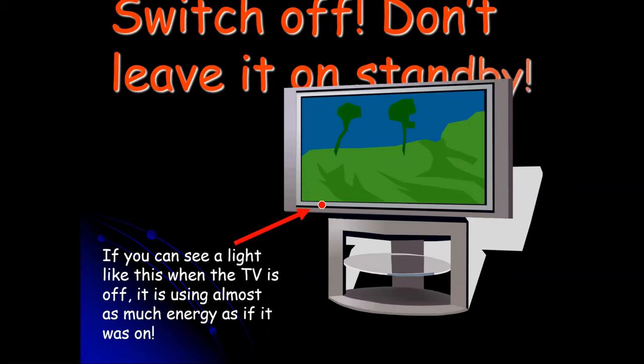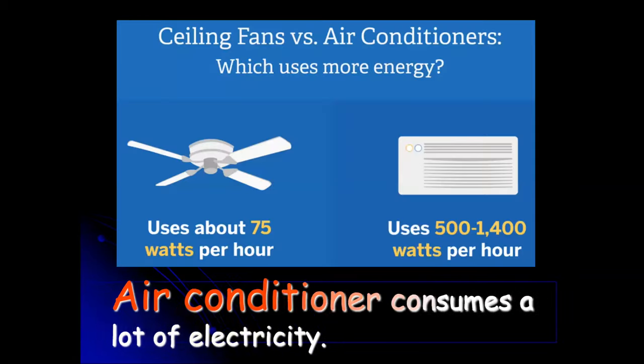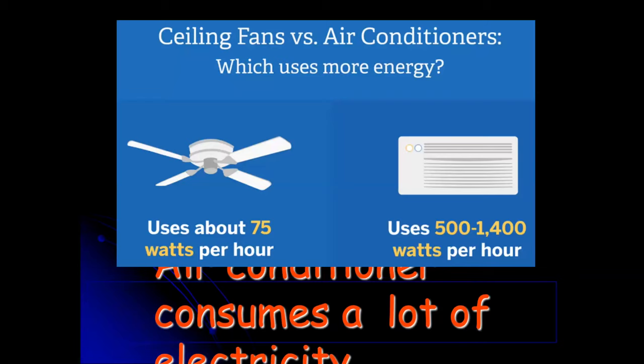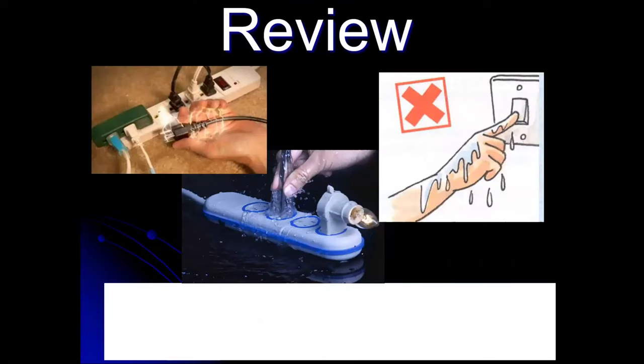Buy energy saving light bulbs. Don't leave the TV on standby. If you can see a light like this red light when the TV is off, it is using almost as much energy as if it was on. So make sure that you turn off the light on your television. Air conditioner consumes a lot of electricity. So make sure you turn it off and set it into 25 degrees Celsius just to feel comfortable. Use fans instead of air conditioners.